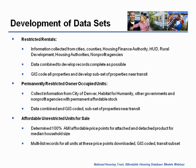The second data set, the permanently restricted owner-occupied units data set, was created using information we got from the city of Denver on their inclusionary housing and other units, Habitat for Humanity inventory throughout the metro area, and units funded by other governments and non-profit agencies that are permanently affordable, including any land bank properties. Not included are owner-restricted properties where the owner might have gotten an affordable mortgage product or down payment assistance loans, since those aren't necessarily tracked by the property and if that owner sold, the property would leave the affordable inventory. Again, we combined all the data, GIS coded it, and created a subset of properties near transit.